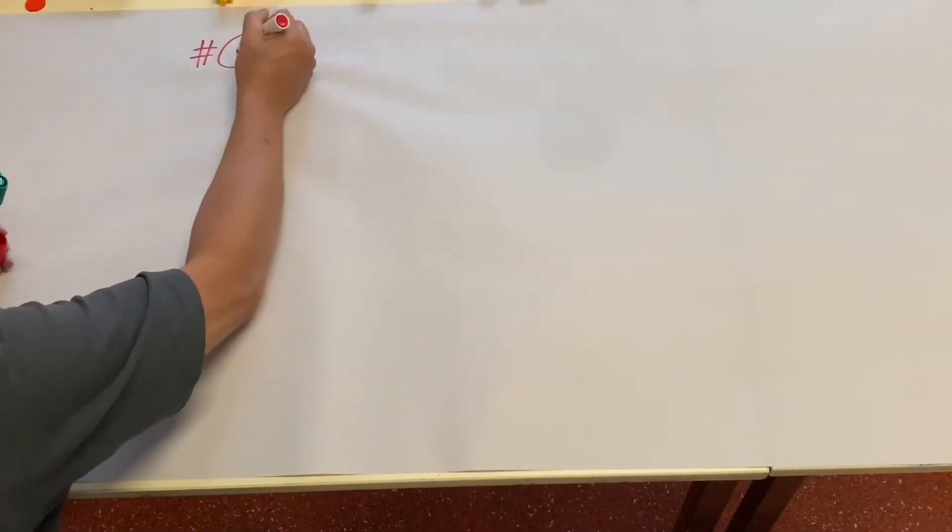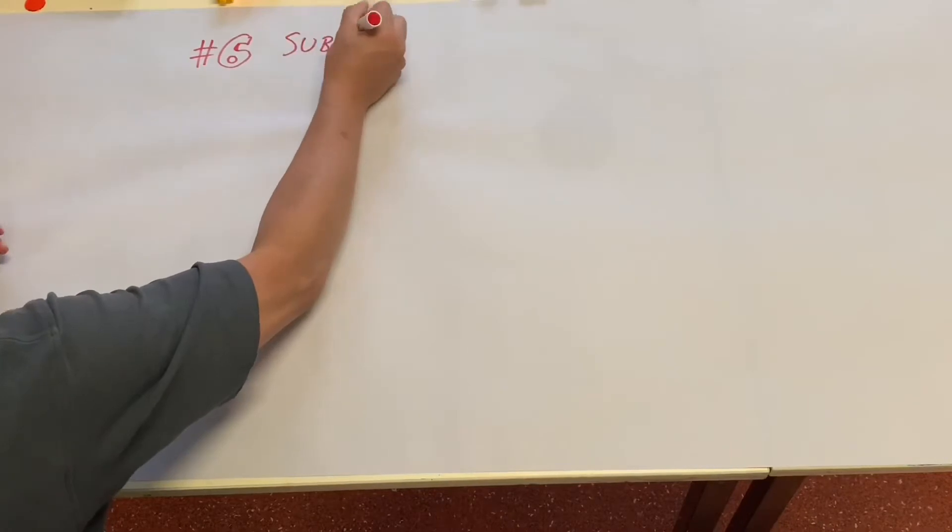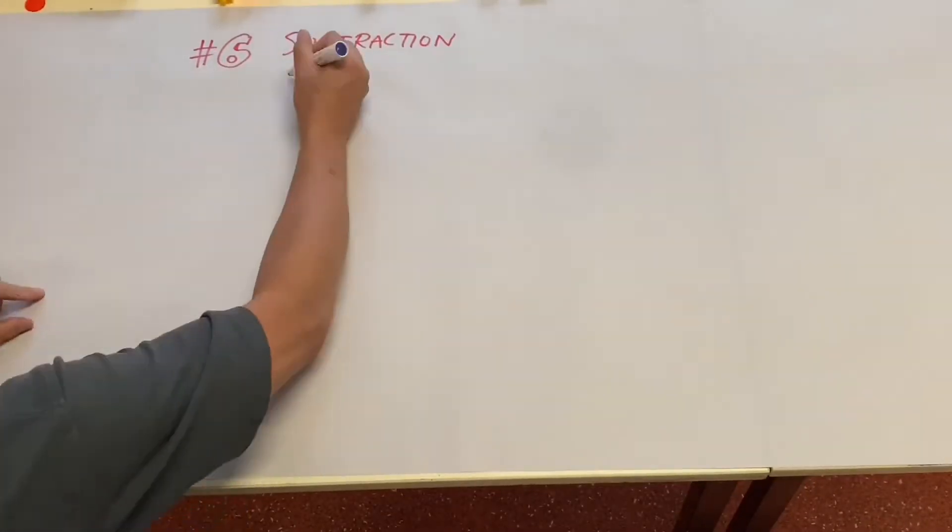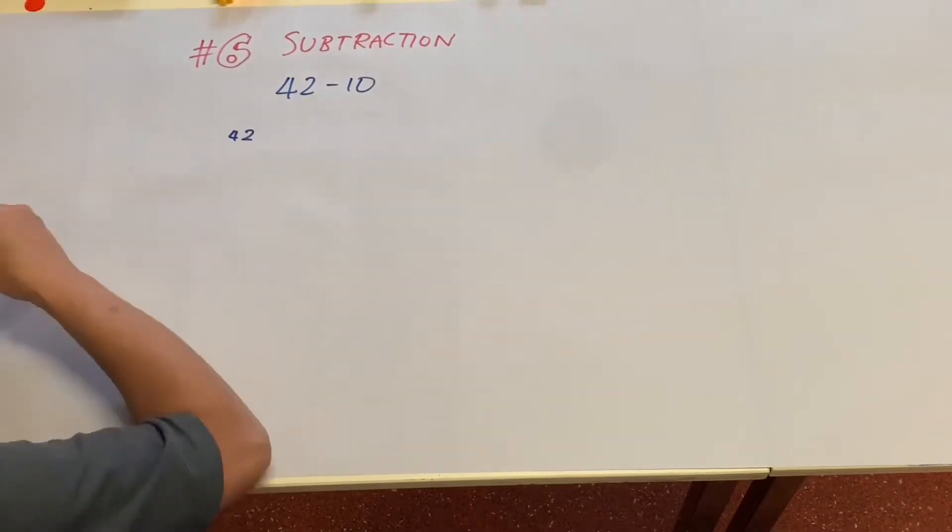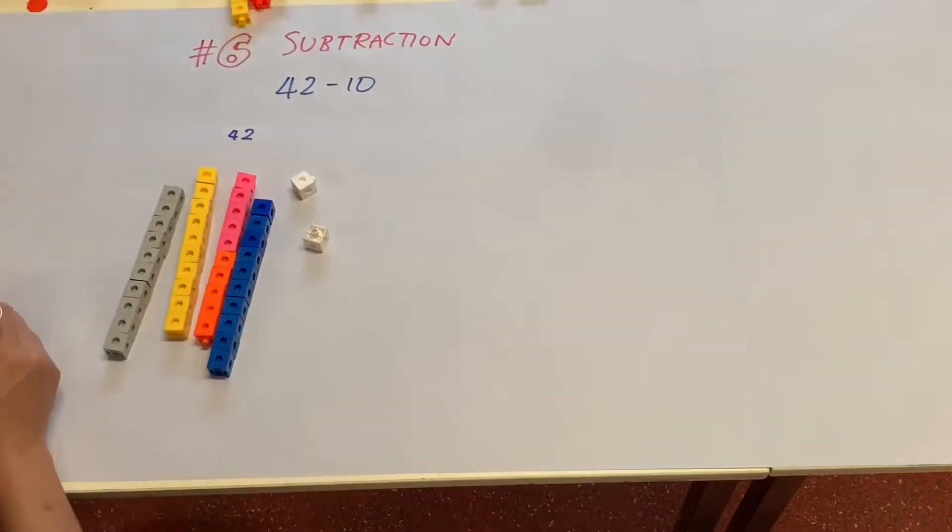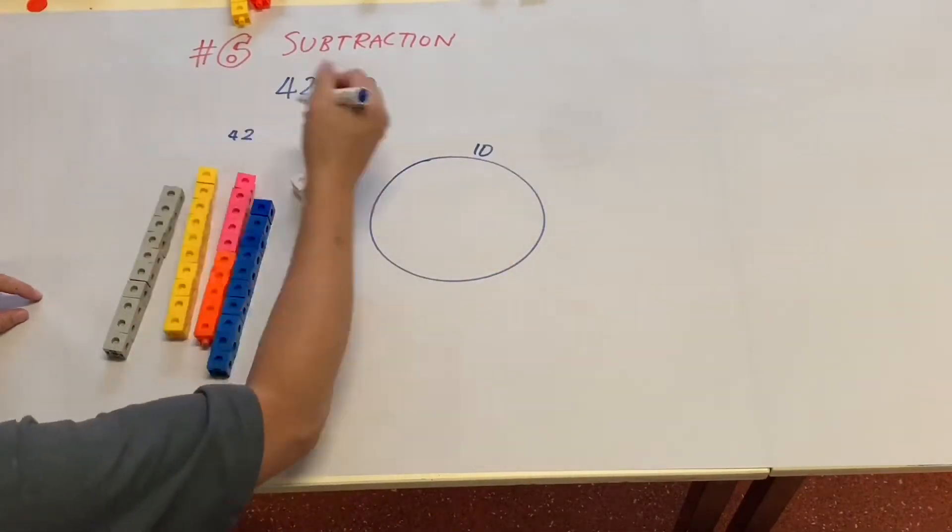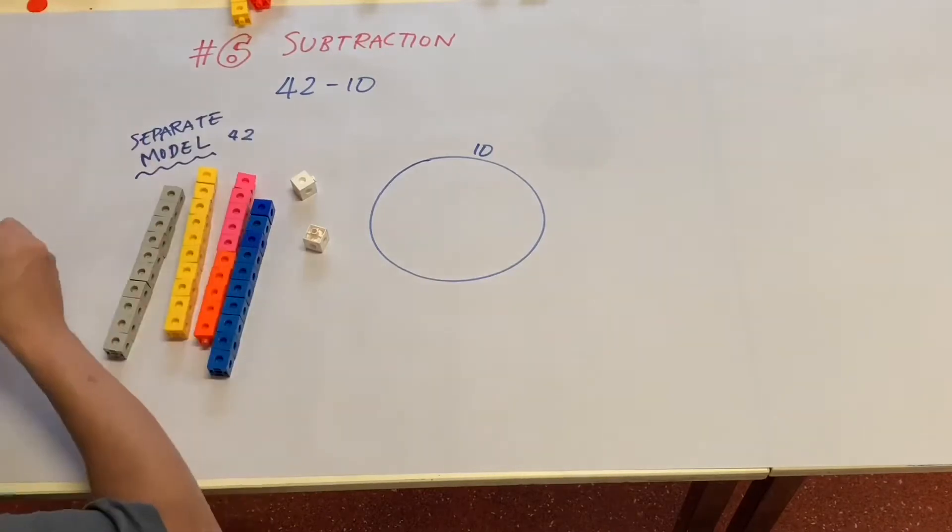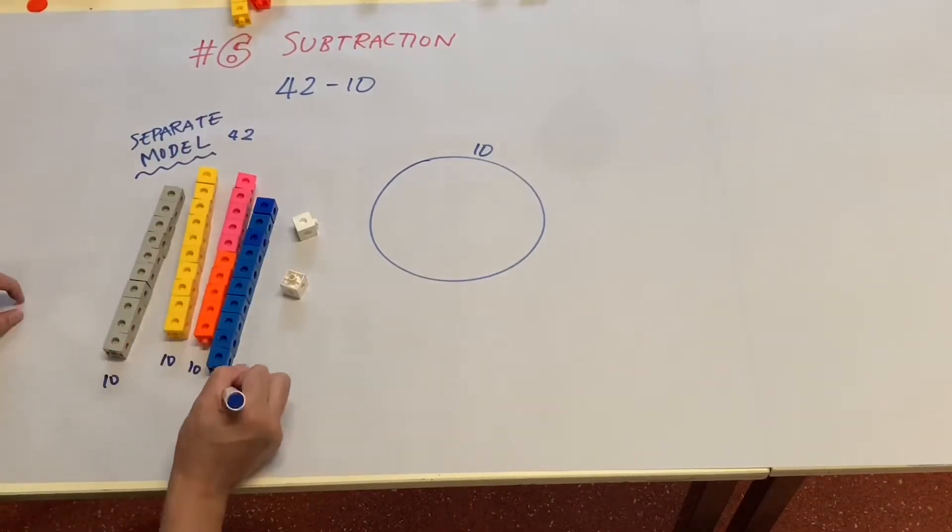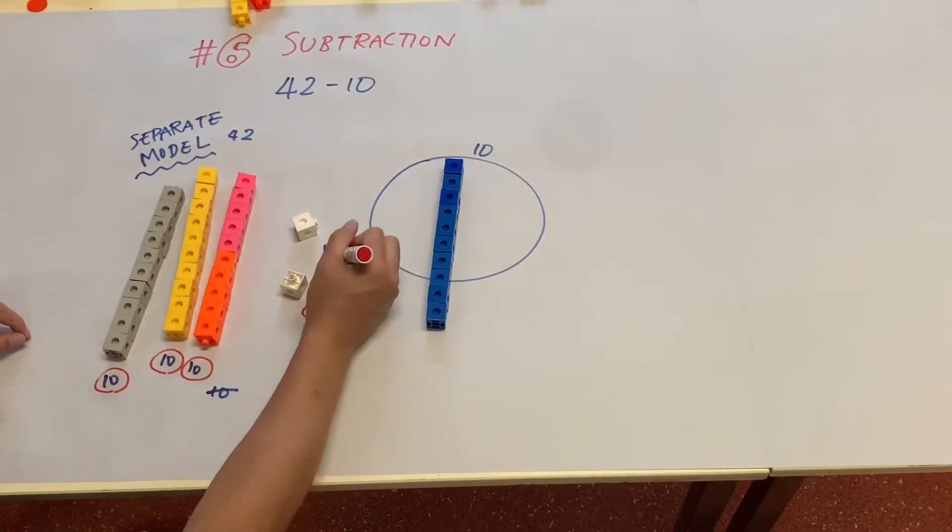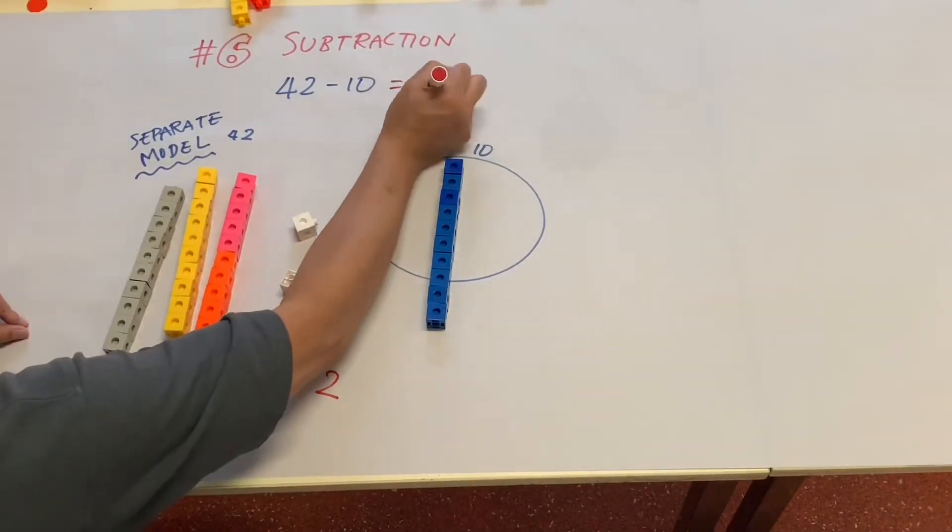Video number six is again subtraction. Students are going to go through a two-digit number take away a ten or tens. We're going to use a separate model. So 42 and take away 10 from the pile, the answer is going to be 32.